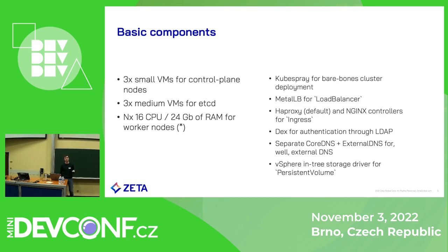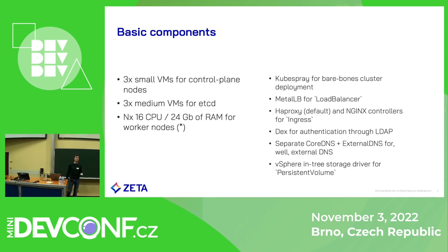Our default ingress is HAProxy. If you don't specify an ingress class in your ingress definition, HAProxy ingress will handle incoming HTTP and HTTPS requests to your workload. For persistent volume support we use a deprecated in-tree driver from vSphere. The reason is our VMware installation is a little old and doesn't support the newer CSI drivers. We're waiting for that to be fixed by another team, and hopefully we'll eventually switch to the cloud storage interface.